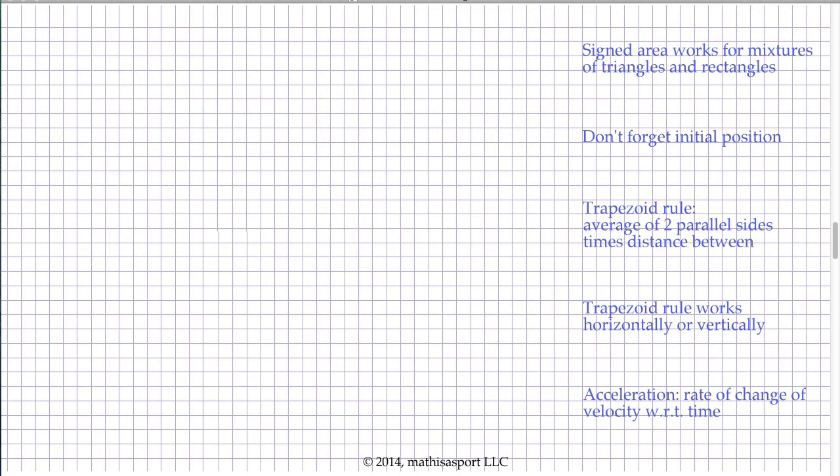Then we learned some mechanics, just a shortcut rule for calculating the areas of trapezoids. And we found that that worked in either horizontal or vertical orientation. And finally, we concluded with the fact that sloped velocity versus time curves, that the slope corresponded to a new quantity acceleration, which is the rate of change of the velocity itself with respect to time.